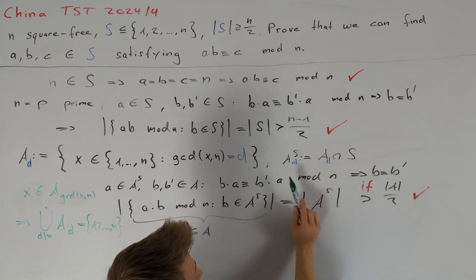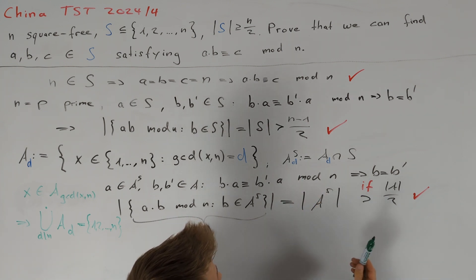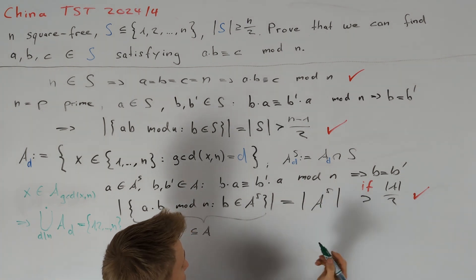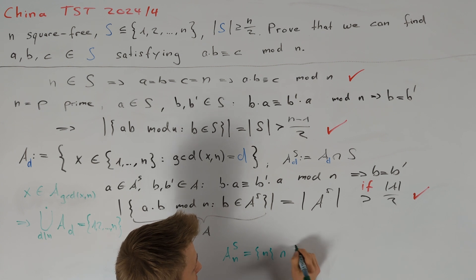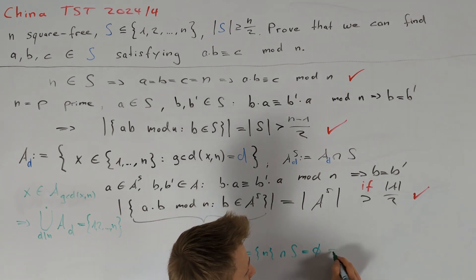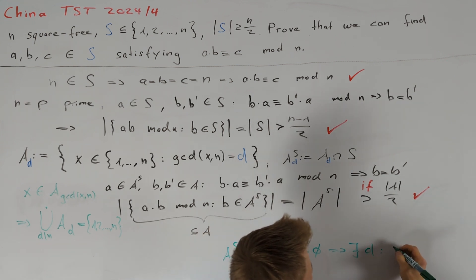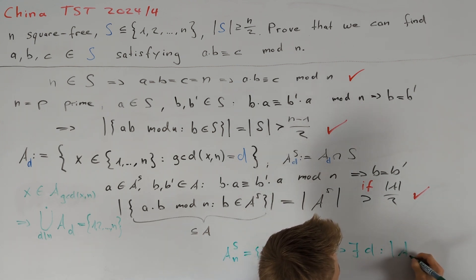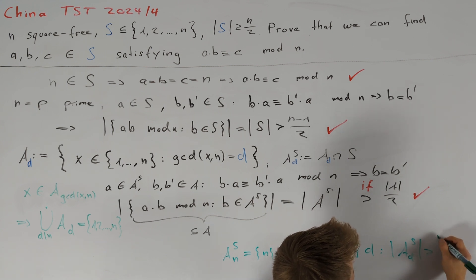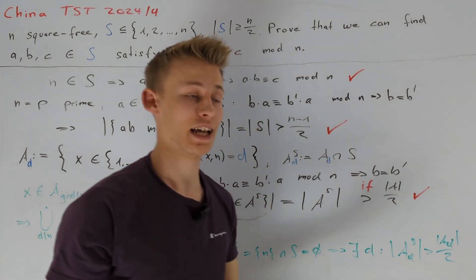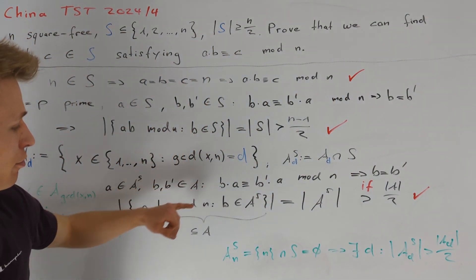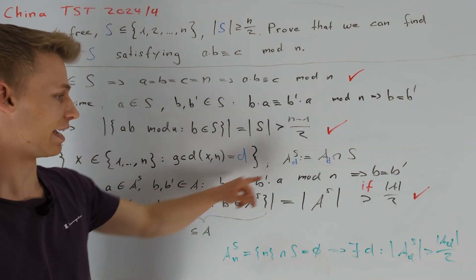Therefore, we know that one of the sets A_d,S has at least half of the elements of the set A_d. And together with the fact that the set A_n,S, which is just n intersected with S, is the empty set, we get that we can find a divisor d of n, such that the magnitude of A_d,S is greater than the magnitude of A_d divided by 2. So, it is left to check that these two properties here are also satisfied for our sets A_d.